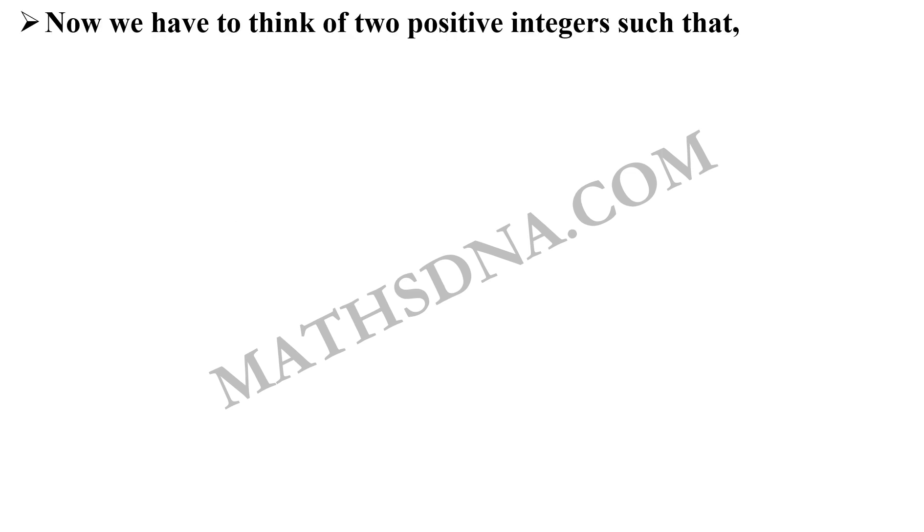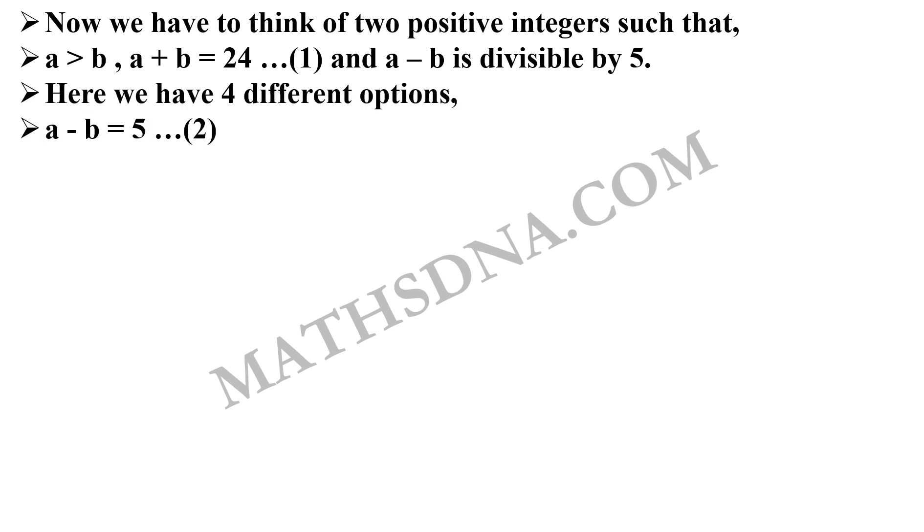So, we have to find 2 positive integers which satisfy the following conditions. That is, a is greater than b. Secondly, a plus b is equal to 24 and a minus b is also divisible by 5. Total, we have 4 different options that a minus b can be equals to 5, a minus b can be equals to 10, can be equals to 15, and can be equals to 20.